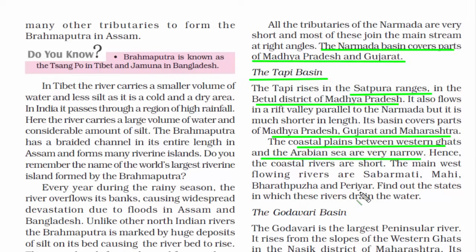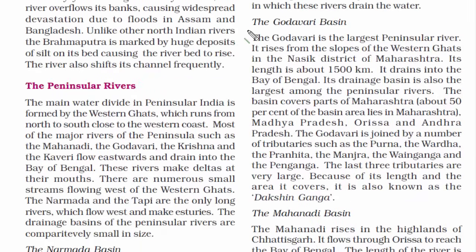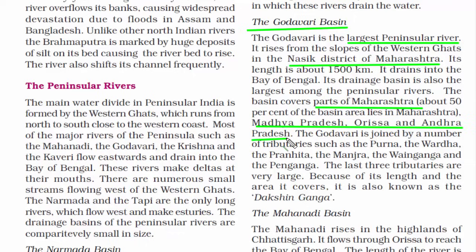Now we will read about the rivers going towards the eastern side. First, the Godavari Basin. In the peninsular region, the Godavari is the largest river. It starts from the Western Ghats in the Nasik district of Maharashtra, then goes to Madhya Pradesh, then Odisha and Andhra Pradesh. There are many small tributaries of Godavari such as the Purna, the Wardha, the Pranhita, the Manjira, the Wainganga and the Penganga.